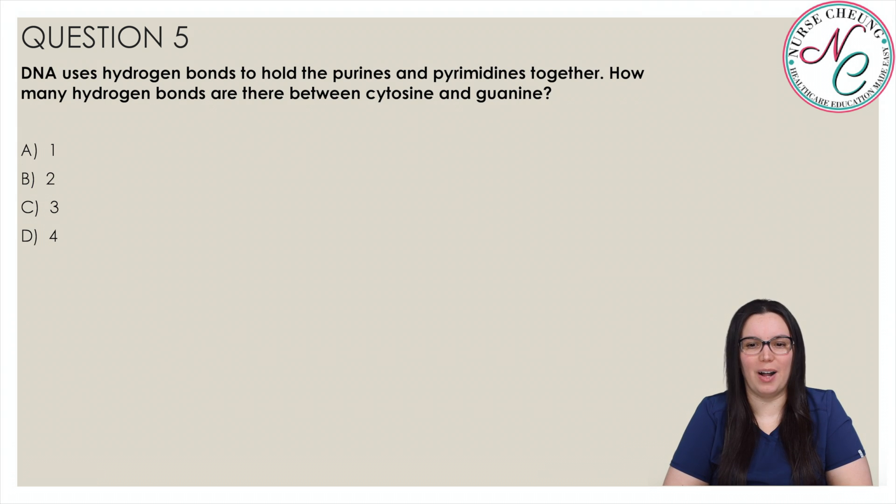DNA uses hydrogen bonds to hold the purines and pyrimidines together. How many hydrogen bonds are there between cysteine and guanine? Is it A: 1, B: 2, C: 3, or D: 4?